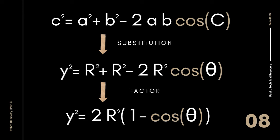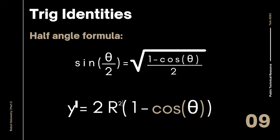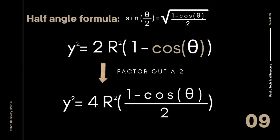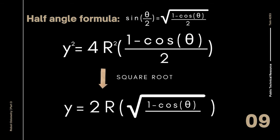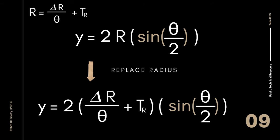Now if you know a little bit about trigonometric identities, then you know that the half angle formula, which looks like this, where the sine of theta over 2 is equal to the square root of 1 minus cosine theta over 2. We can try to manipulate our equation here to match some form of this identity by first factoring out a 2 from the 1 minus cosine theta here. Now if we square root both sides, this becomes very similar to the identity. Simplify this and we get y equals 2 radius sine theta over 2. And we can replace the radius with delta R over theta plus tR.